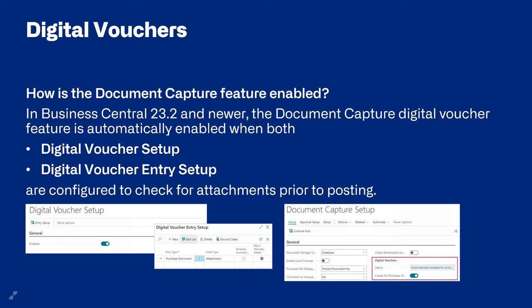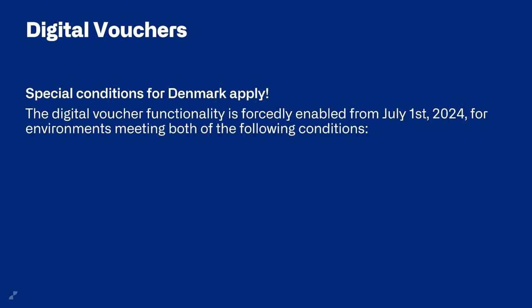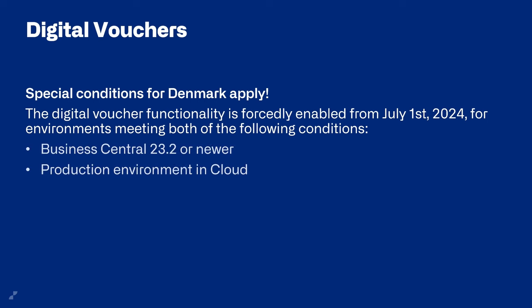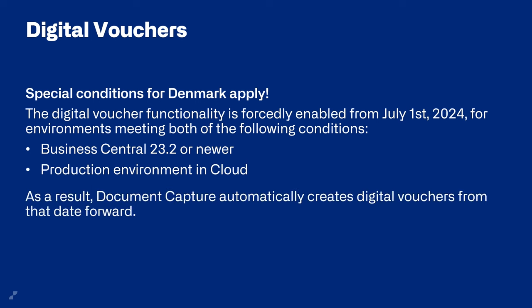There are some special conditions for Denmark: by 1st of July this year, customers on version 23.2 or newer with a production environment in the cloud will have the digital voucher automatically enforced by Microsoft, which means DomoCapture will also automatically include documents into the digital vouchers from that day forward. If you're not on a Business Central version that has digital vouchers available, you can still activate our attachment checking system — simply go to the DomoCapture setup and activate 'Check for Attachments Before Posting' for purchase documents, and you'll get a notification if a document is missing. Note this applies only to BC on-premises versions 23.1 or earlier, since from 23.2 onward it is included in the standard solution.